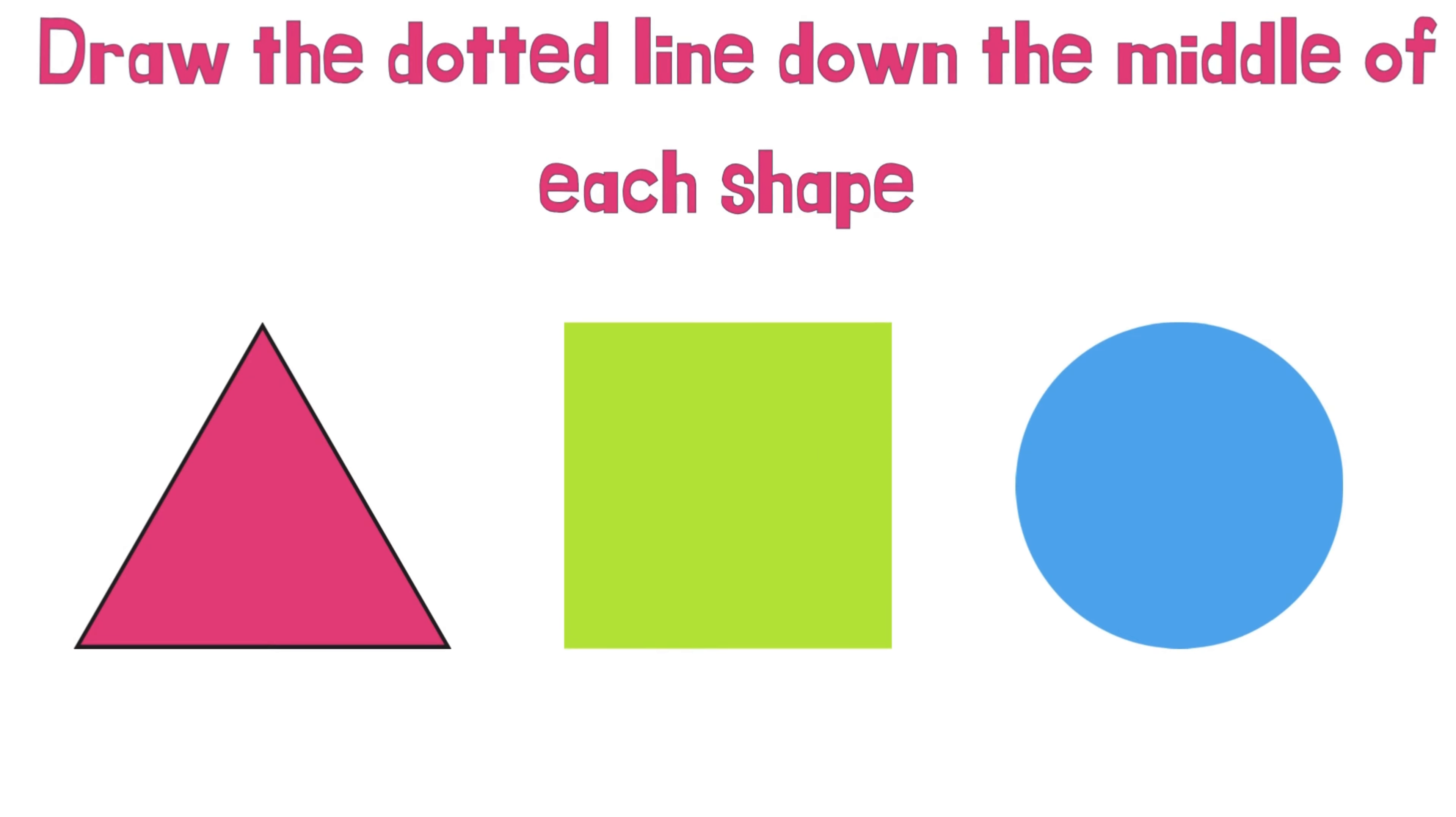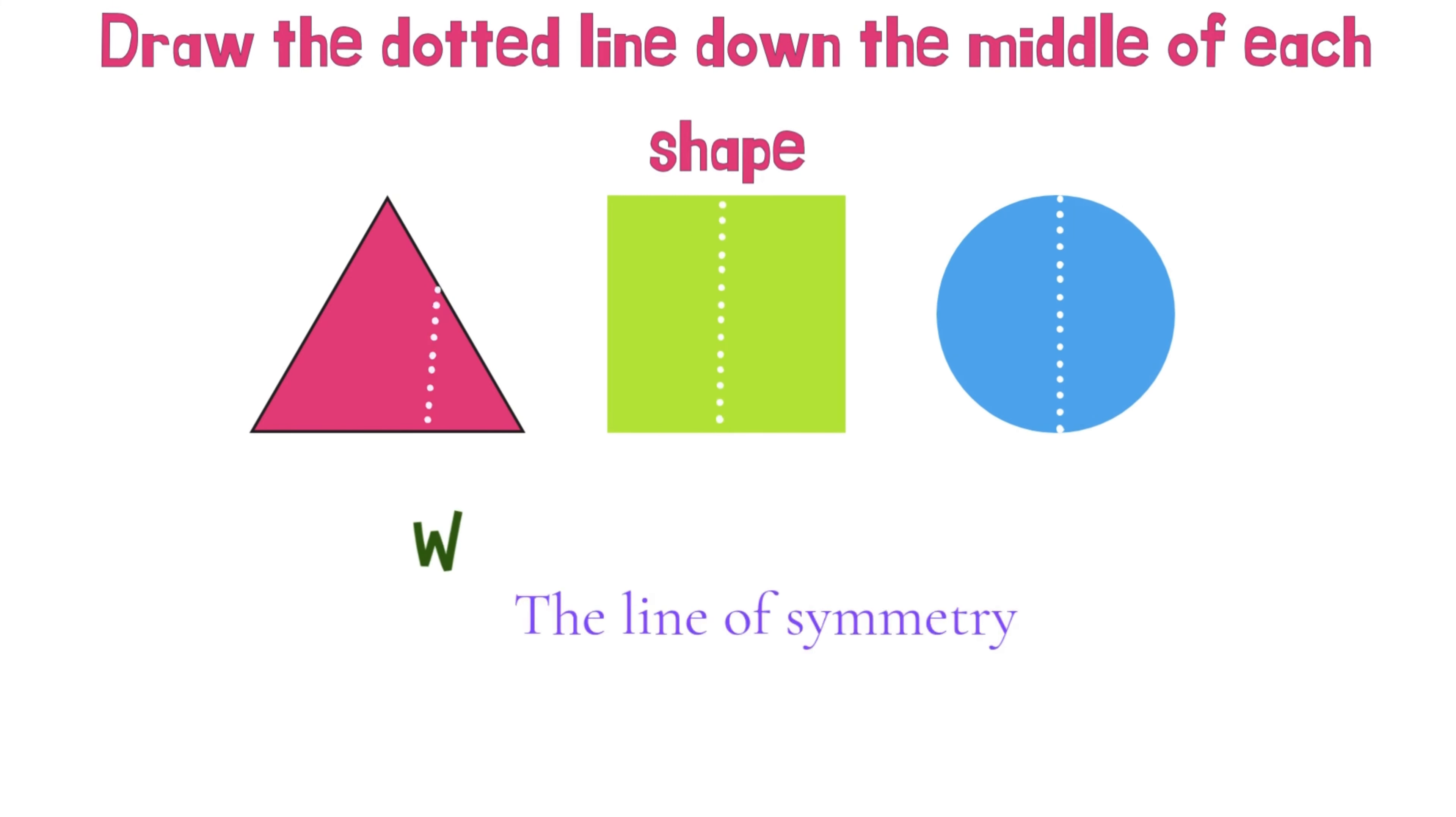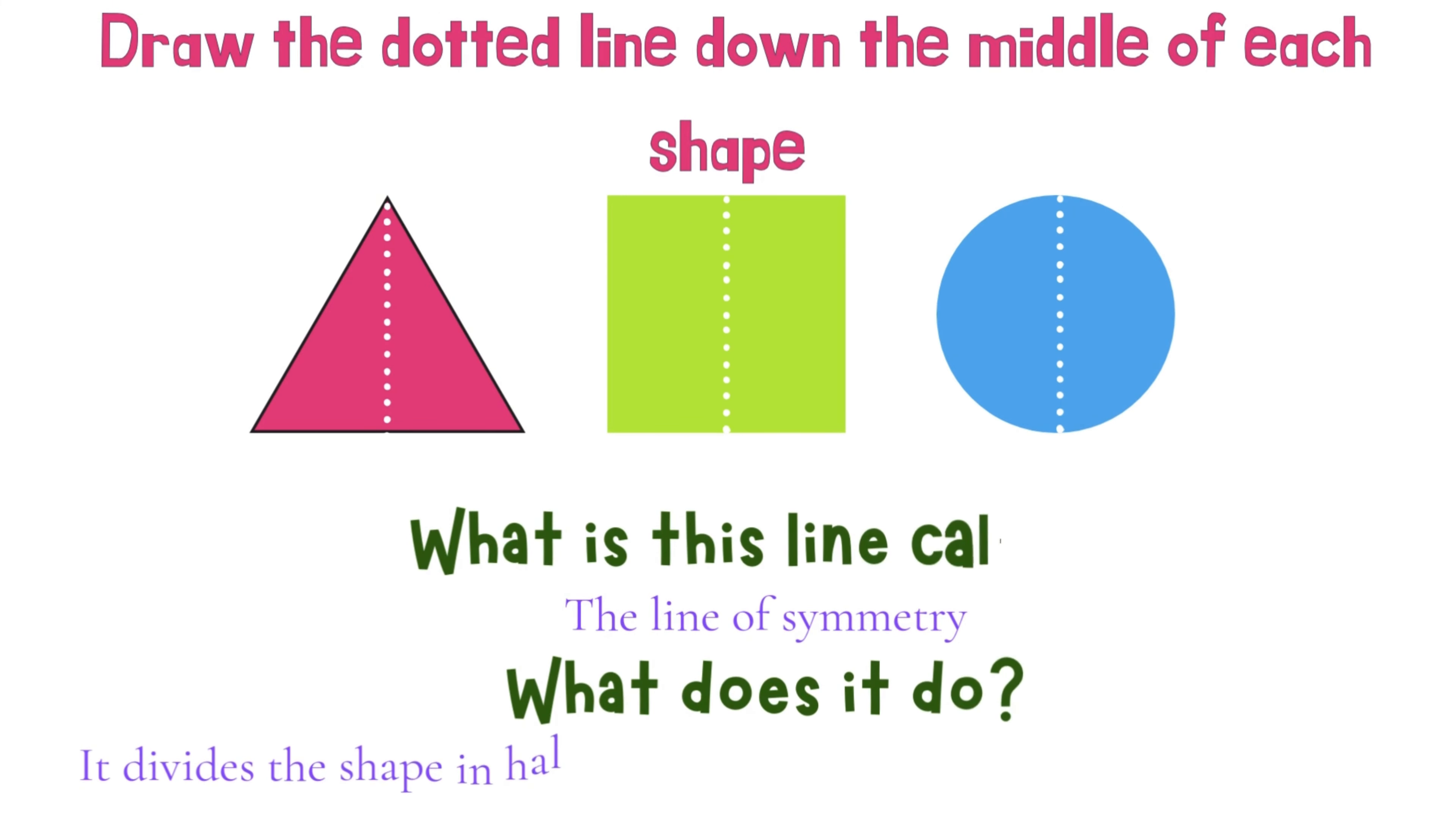Draw the dotted line down the middle of each shape. What is this line called? The Line of Symmetry. What does it do? It divides the shape in half so that the two sides look exactly the same.